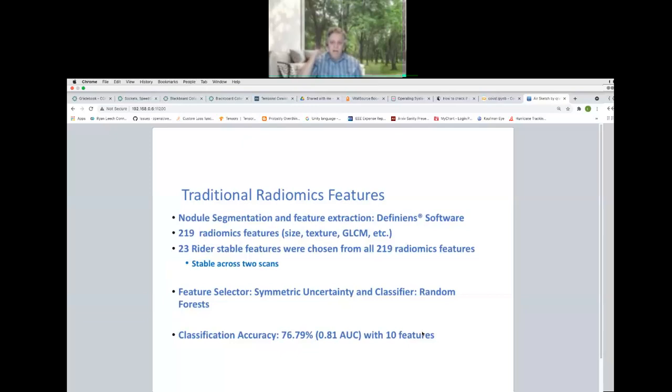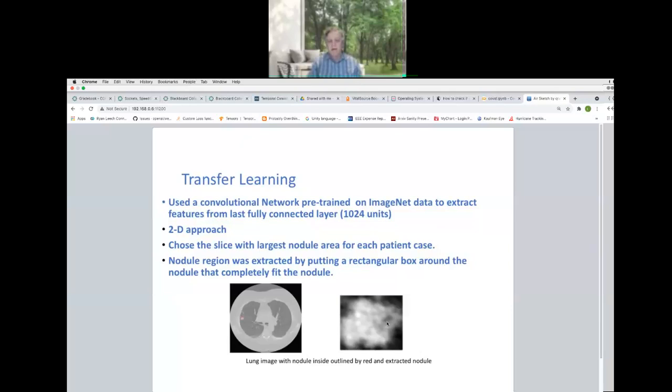So, there was a test done where they scanned the person twice. It had some nodules, and we utilized that to see if their features were stable. We used features like there's symmetric uncertainty, random forest classifier. We were able to get, at the time, the best accuracy we could get was 76.79%. An area under the curve of 0.81, we had 10 features. As for learning, take a convolutional network pre-trained, in this case, on ImageNet. So, it's learned things about, presumably, it's learned things about edges and texture. And we took some stuff from the last convolutional layer. We used a 2D approach. So, all the features before in this previous slide were 3D. So, these are 3D features. Now, we move to 2D.